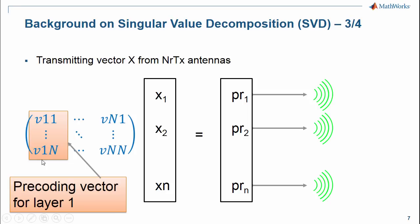Each column of matrix V can be seen as a beamforming vector for a transmit layer, as it distributes one layer over all transmit antennas.